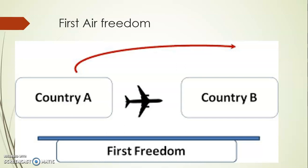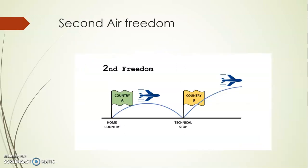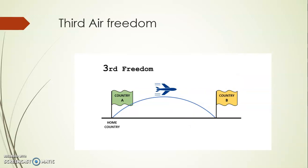The Second Air Freedom means that an airline of country A may make a technical stopover in country B while going to country C. From this stopover, the airline cannot take on or drop off any passengers — it is only for technical purposes such as refueling, maintenance, or other operational needs. So the airline may stop in country B for technical reasons only.